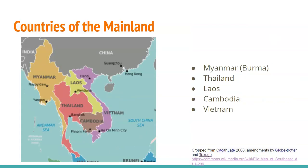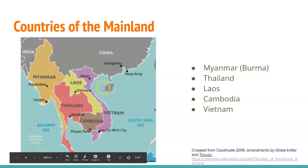On the mainland, the countries we have are Myanmar, also known as Burma. We'll talk about in our next lecture the difference between the term Myanmar versus Burma and who uses which term and why. For reference, the United States government currently uses the term Burma, but the government of Myanmar uses the term Myanmar. We also have Thailand, Laos, Cambodia, and Vietnam.